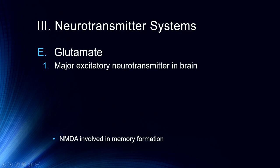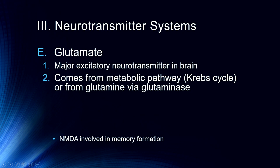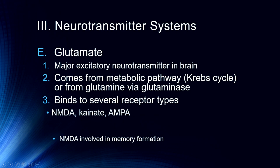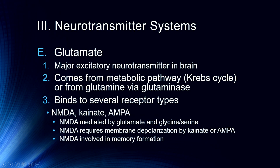Glutamate is our major excitatory neurotransmitter in the brain. It comes from a metabolic pathway via the Krebs cycle or from glutamine by glutaminase. It binds to several receptor subtypes: the NMDA receptor, the kainate receptor, and the AMPA receptor. The NMDA receptor is mediated by glutamate and glycine and serine, and it requires membrane depolarization by one of these other receptor subtypes. The NMDA receptor is really important because it's involved in memory formation, and it has a number of receptor locations on it which can be influenced by a variety of different neurotransmitters and drugs.